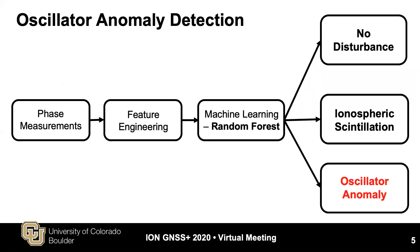This slide shows the oscillator anomaly detection procedure. In order to detect oscillator anomaly, we have to distinguish it from ionospheric scintillation and no disturbance. Here, scintillation refers to rapid phase fluctuation of the signal propagating through the ionosphere. To conduct this detection task, phase measurements are first input to feature engineering, where features that can differentiate among these three classes are constructed.